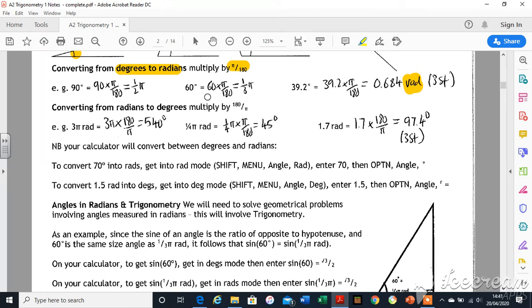So 60 degrees, so it's divide by 180 times by π. 39.2, divide by 180 times by π. The important thing here is these two answers are exact in terms of π, whereas this is just a number. It's the same though, isn't it?